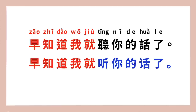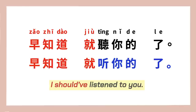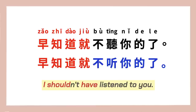For example, 早知道我就听你的话了 — 'I should have listened to you.' Often 话 is dropped, so you'd say 早知道我就听你的了. You can also drop the subject 我 and say 早知道就听你的了. To negate the sentence, you can say 早知道就不听你的了 — 'I shouldn't have listened to you.' Add the negation word before the verb.